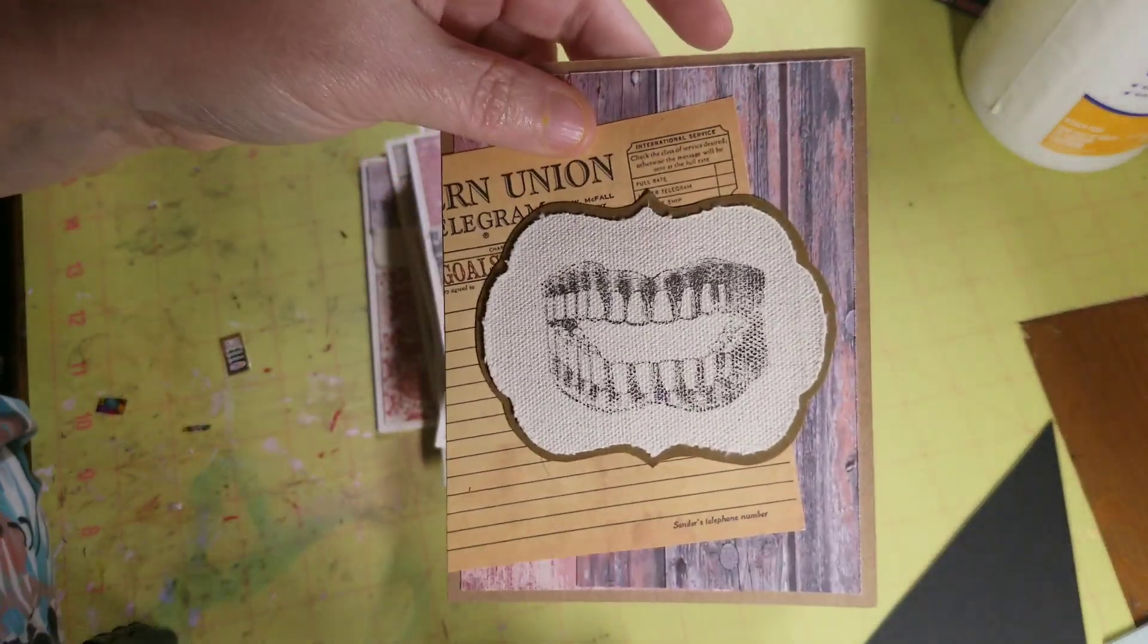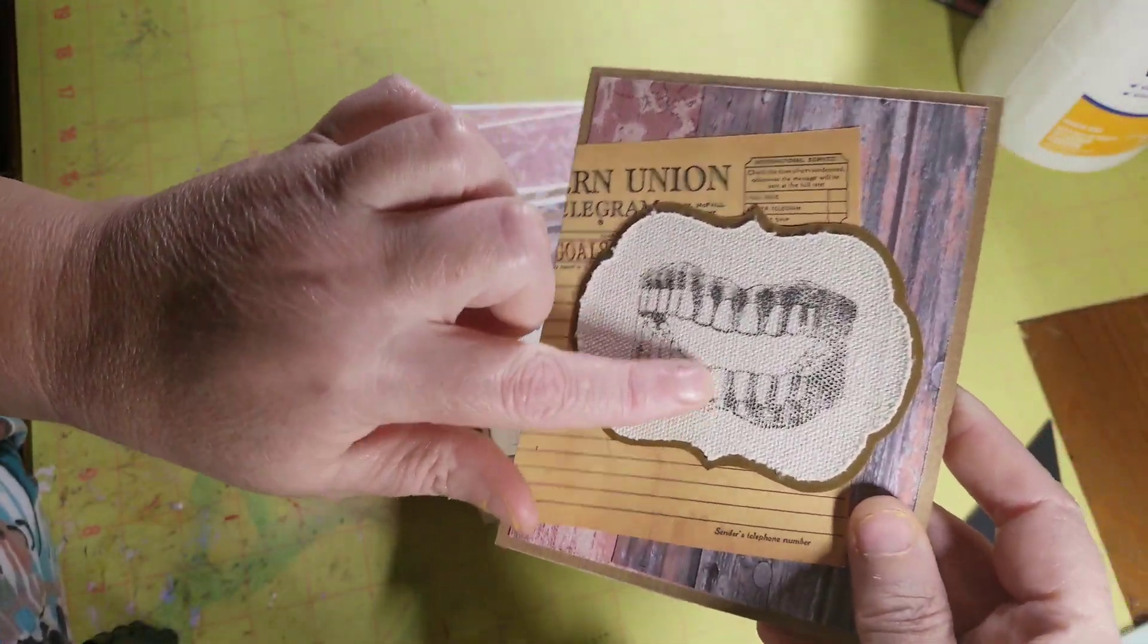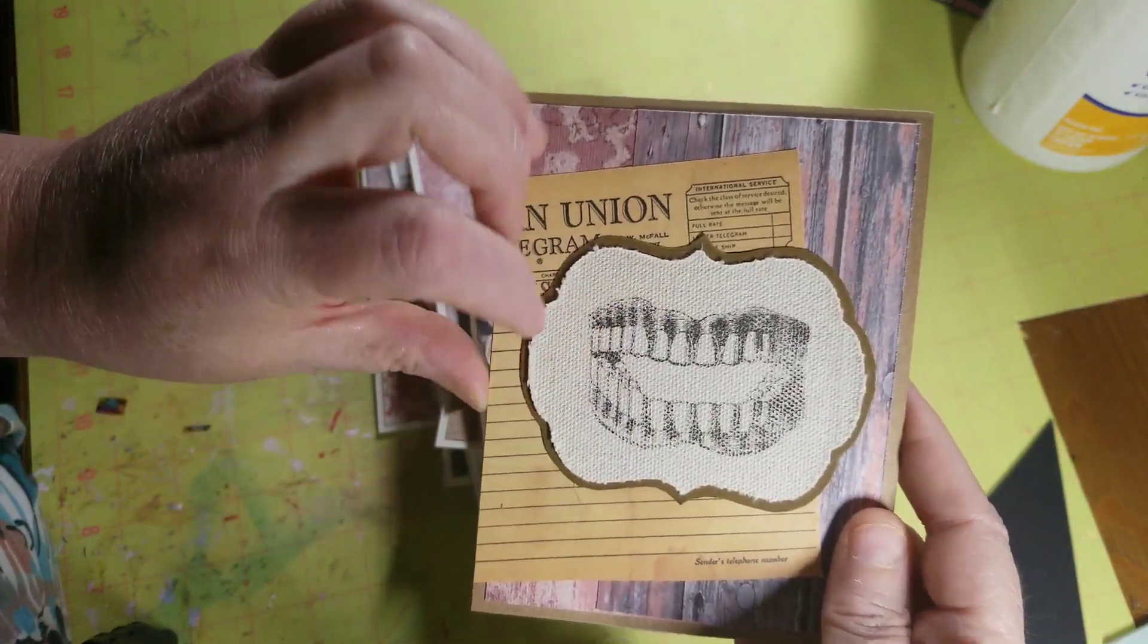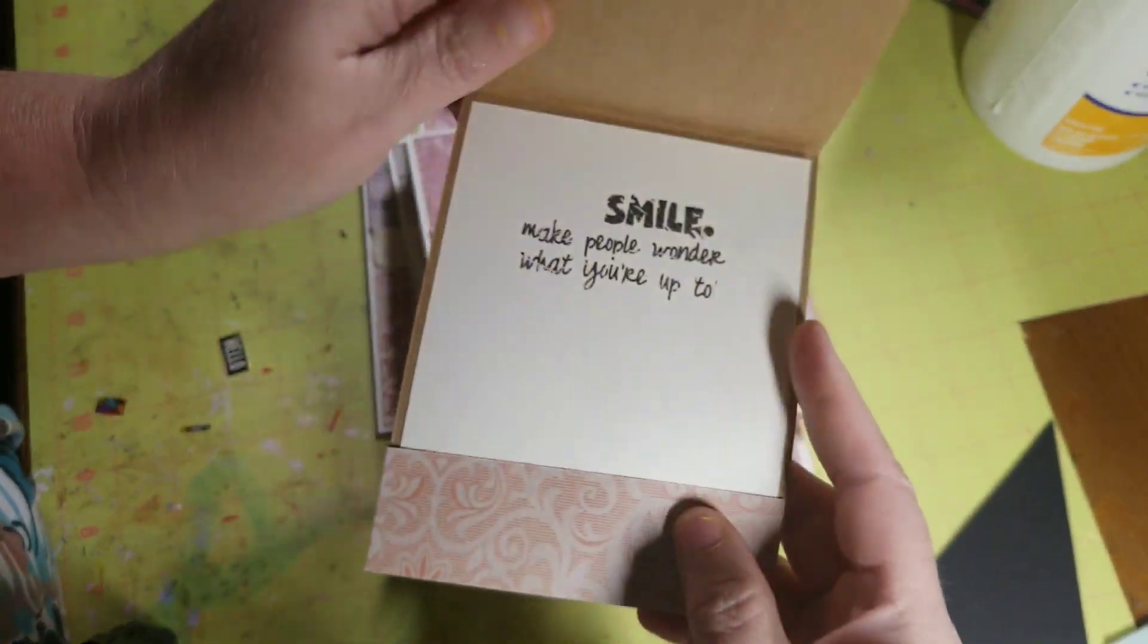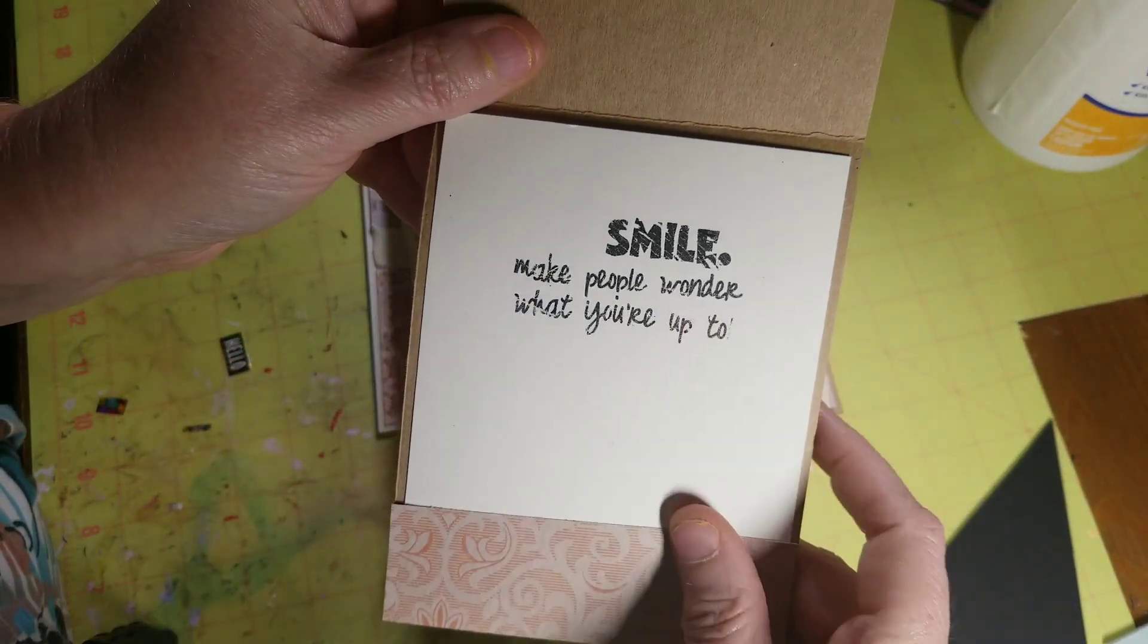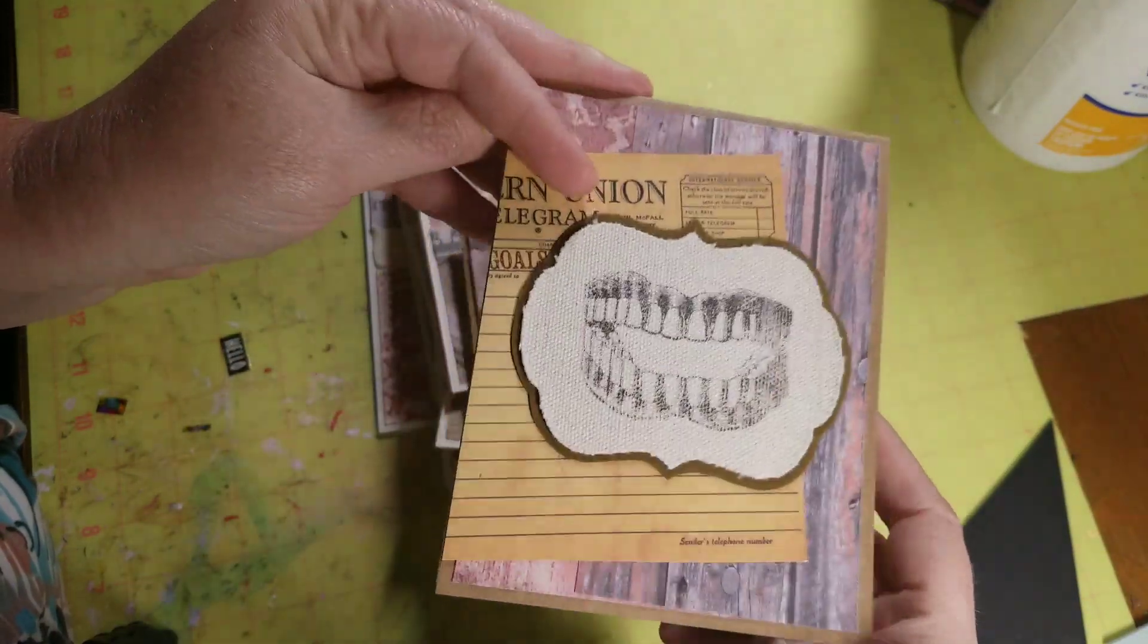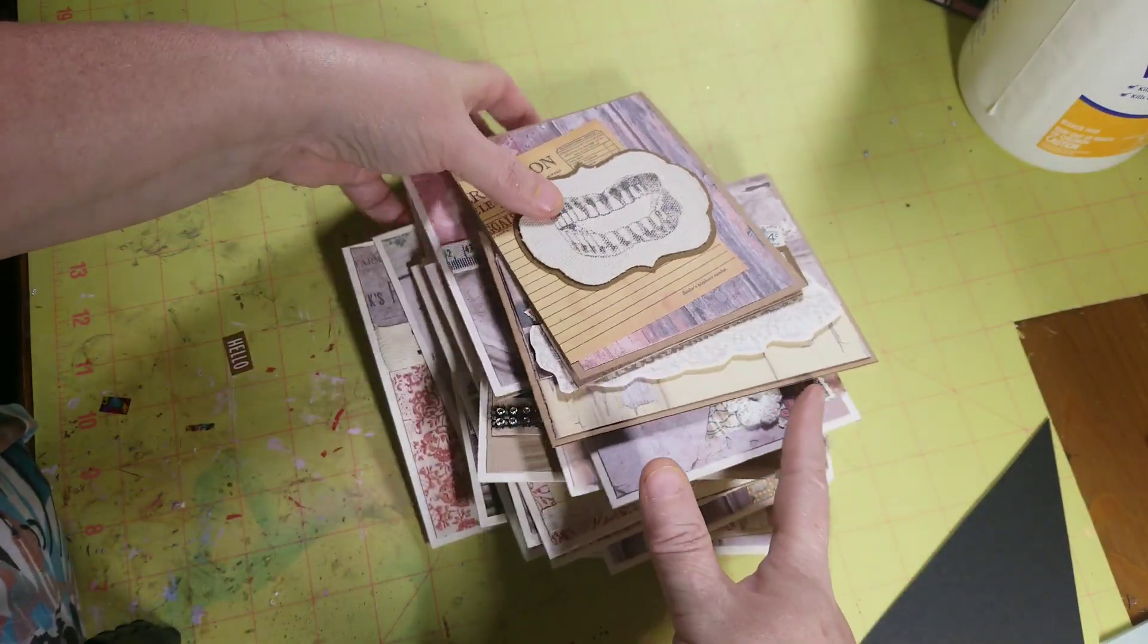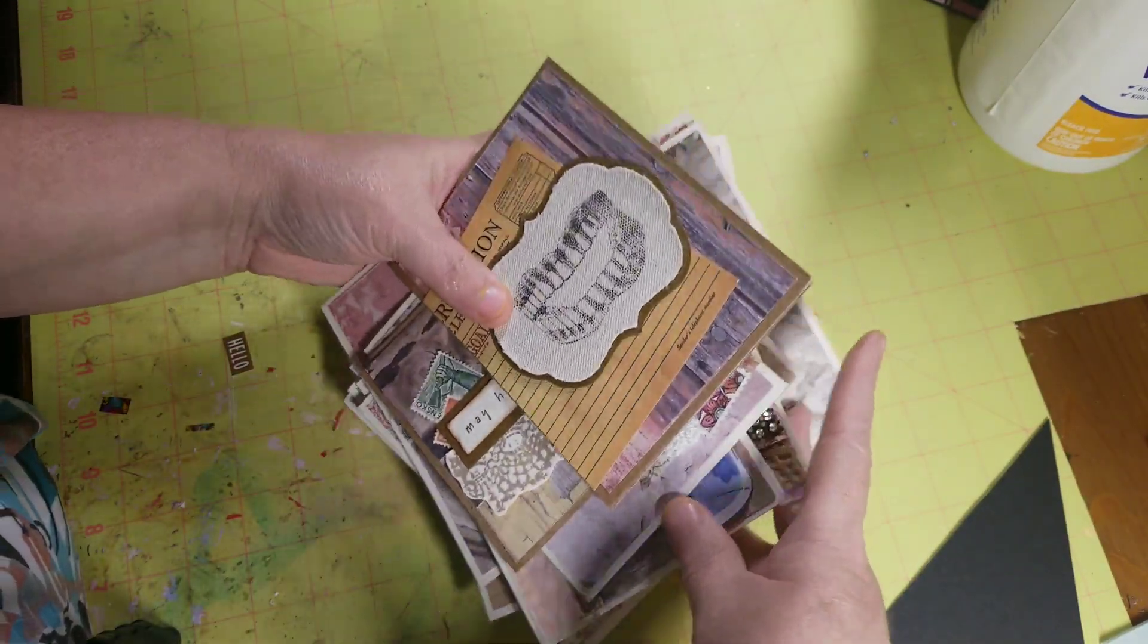And then this one, that was a rub-on and I put it on this canvas label. Just using up some stuff and I got 23 cards out of it, who knew.